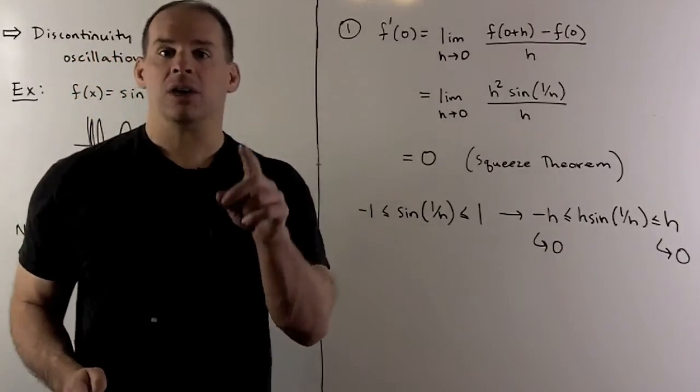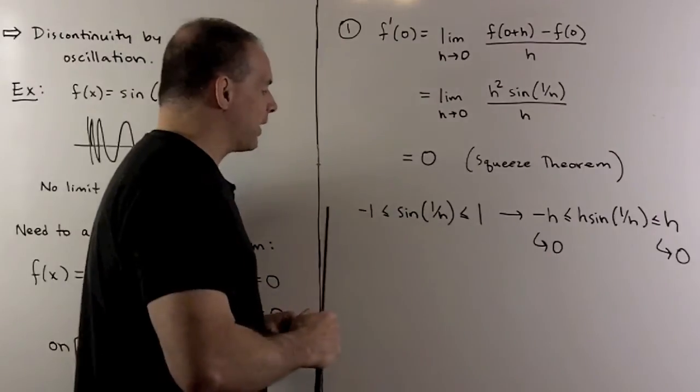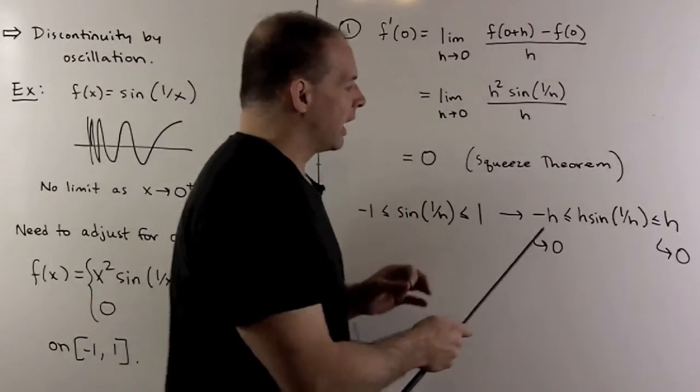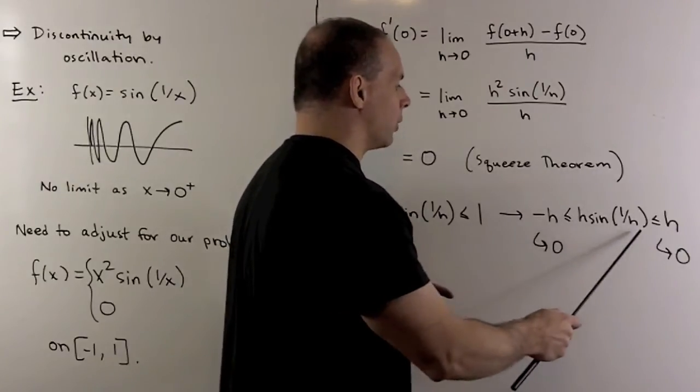Now, sine of anything is always going to be between -1 and 1. If we multiply through by h, we have the item we're taking the limit of. By the squeeze theorem, we're going to get this to go to 0.